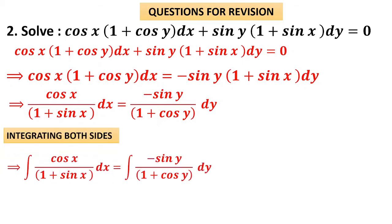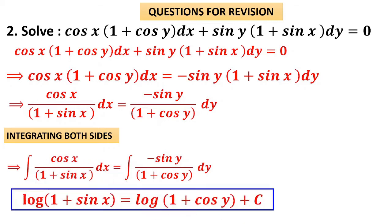Let us integrate — highly interesting integration! The numerator contains the differentiation of the denominator. Differentiation of (1+sin x) is cos x, which is in the numerator. Differentiation of (1+cos y) is −sin y, which is also in the numerator. So we can write directly log of the denominator: log(1+sin x) = log(1+cos y) + c. We can do this by substitution, but since the numerator contains exactly the differentiation of the denominator, we directly write log of the denominator.